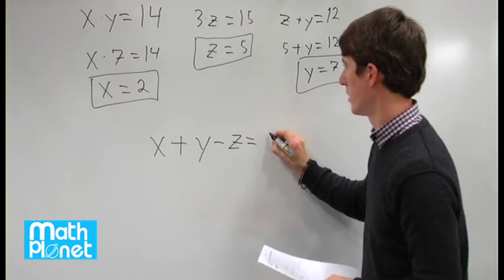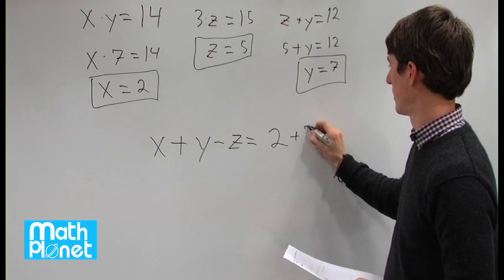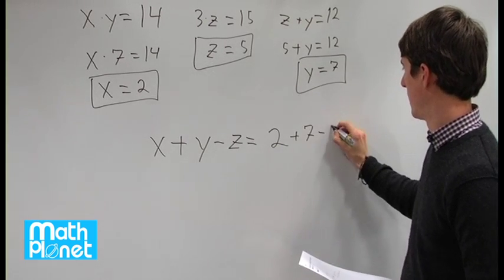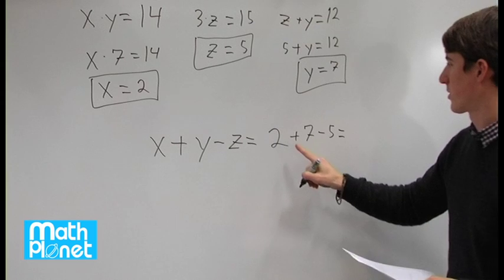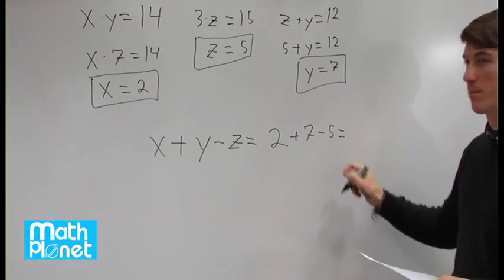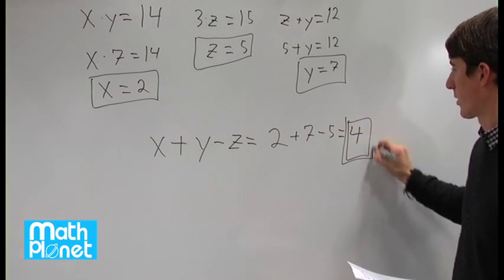which is 2 plus 7 minus 5. And that just gives us 2 plus 7 is 9, minus 5 is 4. And here's our final answer.